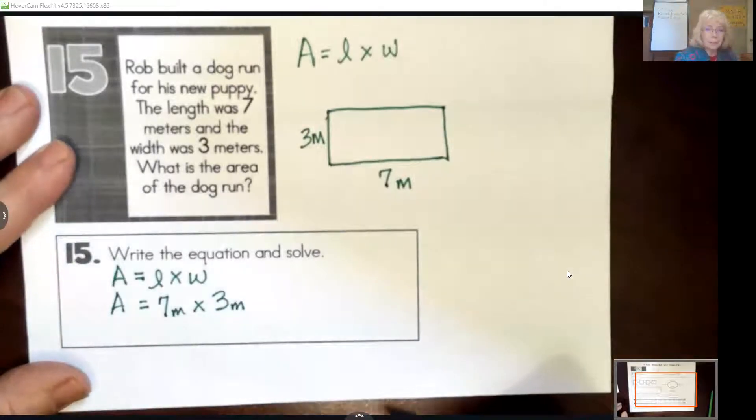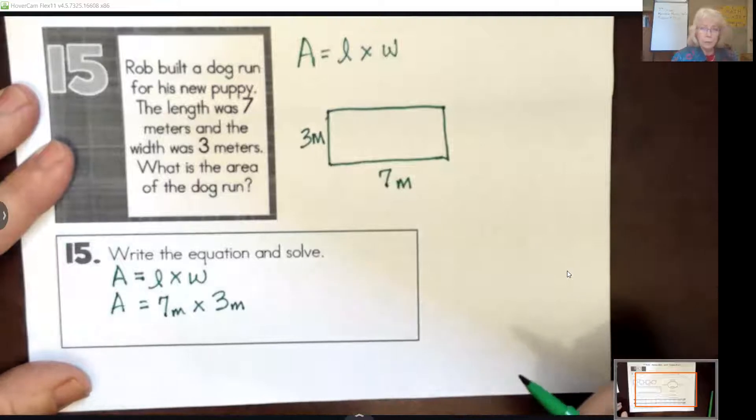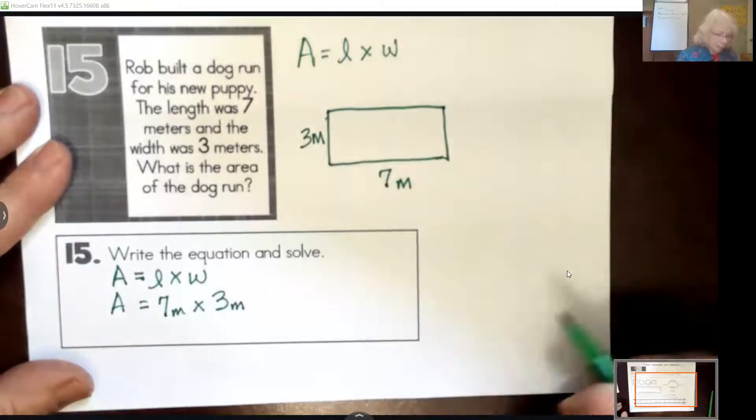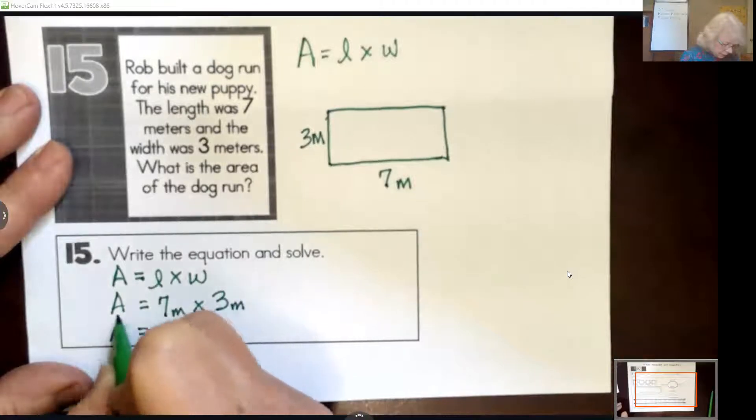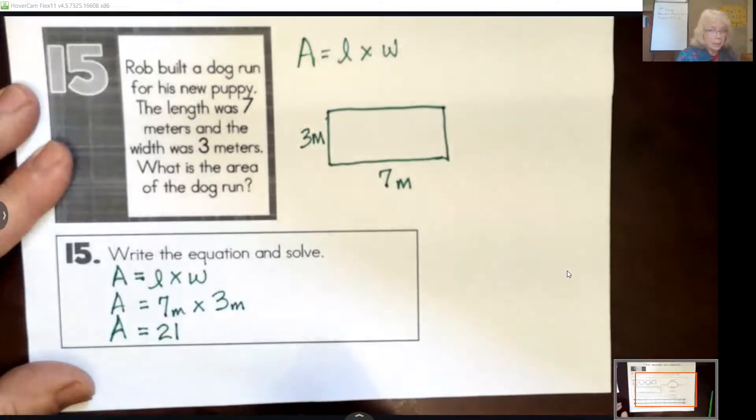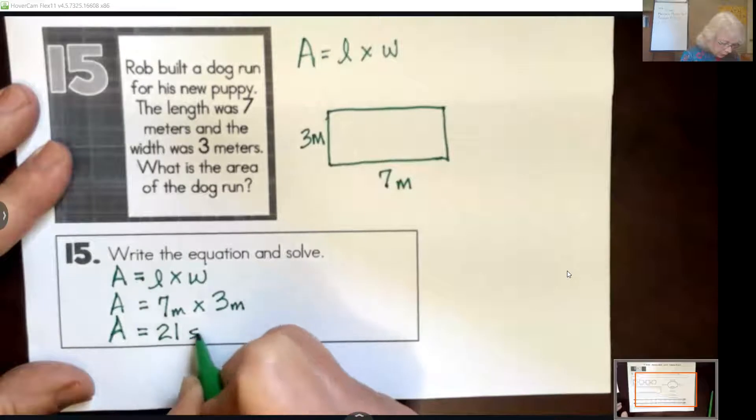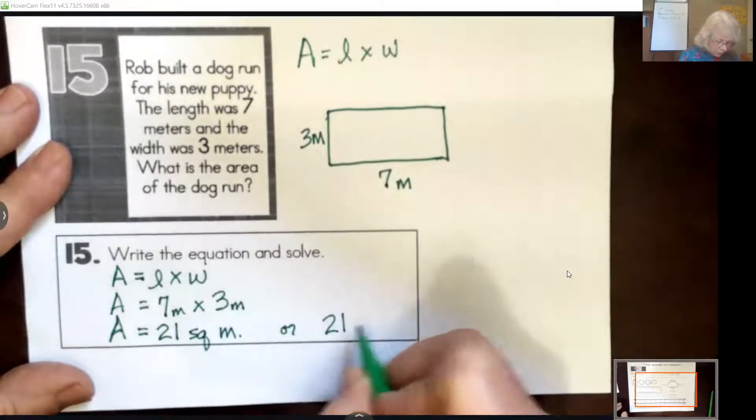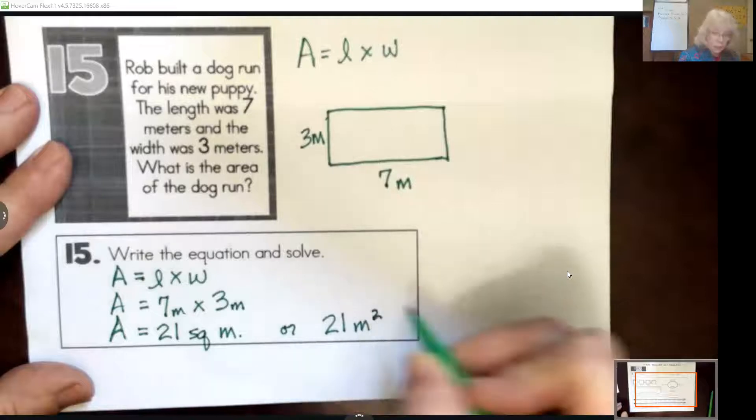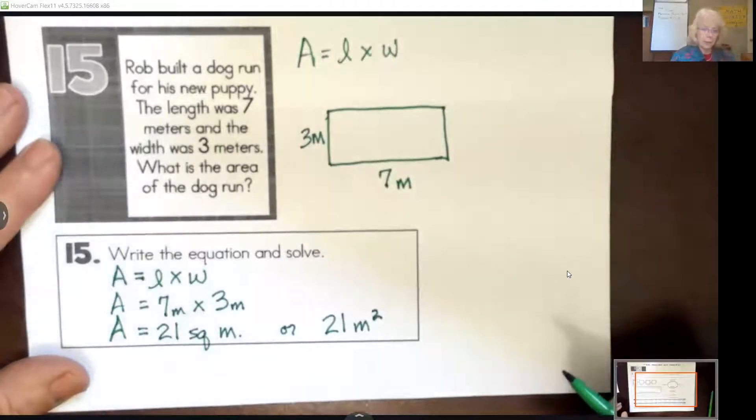So my answer to this. I have to know either my threes or my sevens. Seven times three is 21. And again, you need to label this and it's either square meters or 21 meters squared with a little two superscript.